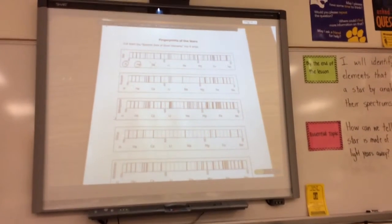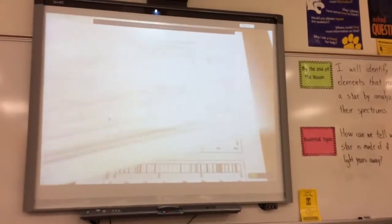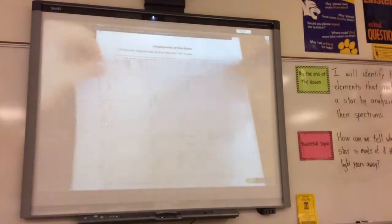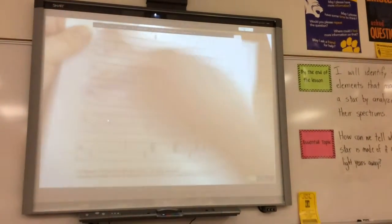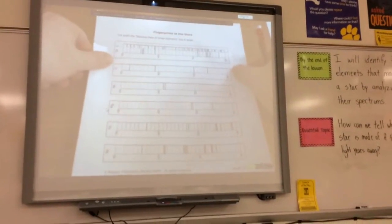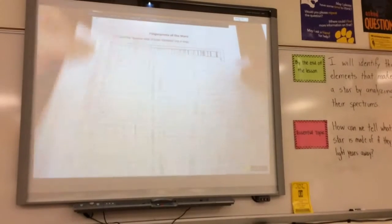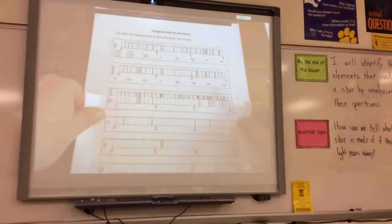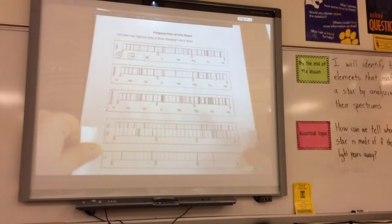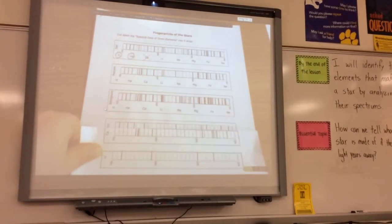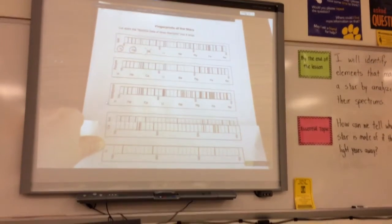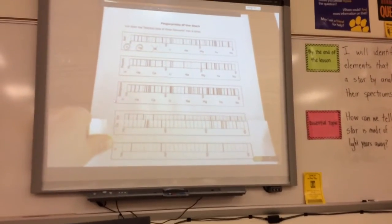You kind of see what I'm doing and how this is working. All right. You're going to continue doing this down the page. All five stars, compare them to all eight elements. Pro tip. It might be a good idea, so say calcium, I'm working on calcium. Check calcium versus the Sun. Then check calcium versus Prokion. Then check calcium versus Beetlejuice. And just go all the way down the line for all five stars. Just do one element at a time for all five stars. It might be a little more efficient that way. Does this make sense? Yes. All right.